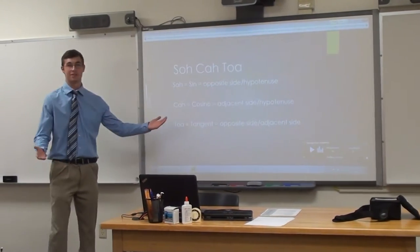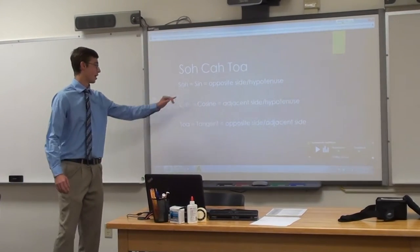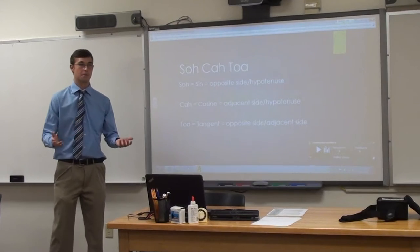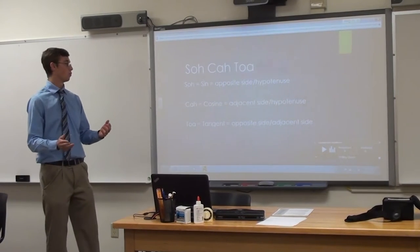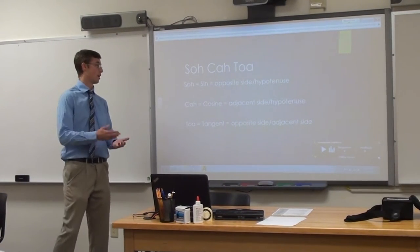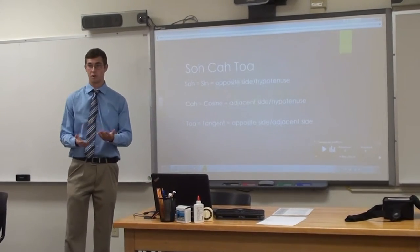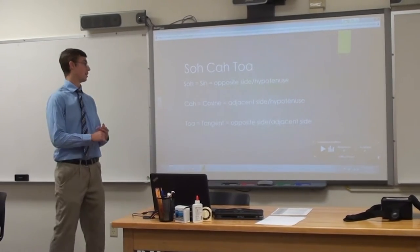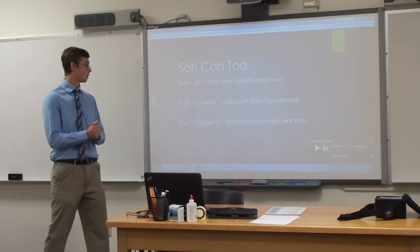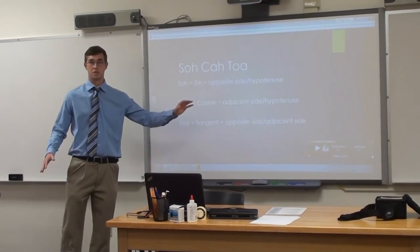Alright, and this goes back to SOHCAHTOA — sine, cosine, tangent. Sine is always going to be the opposite angle, because the opposite angle determines the opposite side over the hypotenuse. The adjacent side over the hypotenuse is the cosine. And the tangent is going to be the combination of sine and cosine — specifically opposite over adjacent — so there's going to be no hypotenuse used in tangent.